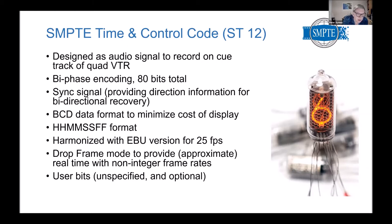So they introduced drop frame mode, where once per minute for the first nine minutes of each ten, you dropped two counts — you went from 27 to 00 instead of 29 to 00. You did that for nine minutes and didn't do it on the tenth minute. That managed to correct for the average of 1.8 frames per second to make the displayed time look like real time. It was still only approximate, and people would do jam sync once a day to line it up again.